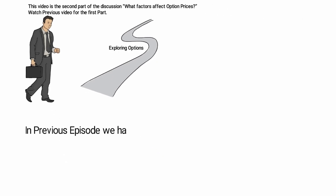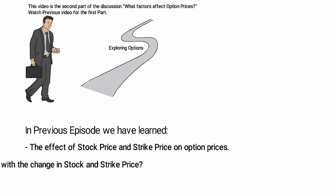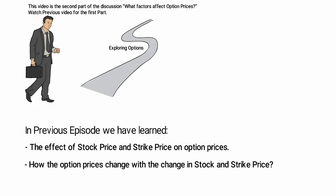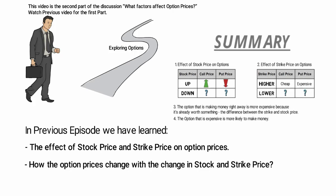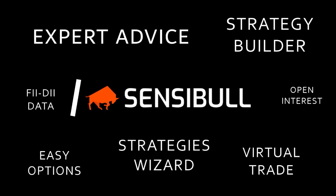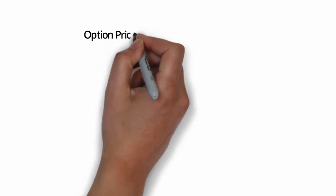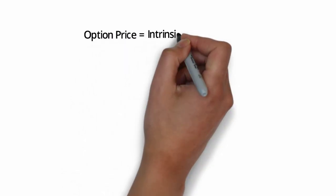In the previous video, we talked about the effect of stock price and strike price on the option prices. We also looked at how the option prices change with the change in stock and strike price. In this video, we will see the concept of intrinsic value and time value. If you take the price of an option, it has two parts: intrinsic value and time value.